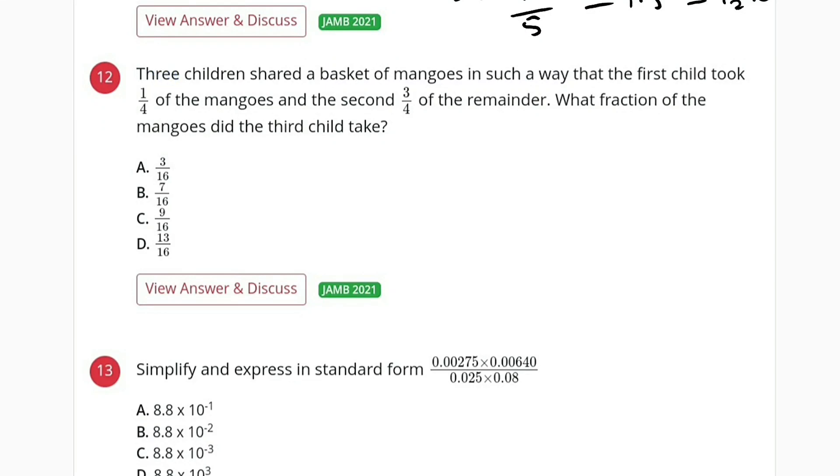Question number 12 reads: Three children shared a basket of mangoes in such a way that the first child took 1 over 4 of the mangoes and the second child got 3 over 4 of the remainder. What fraction of the mangoes did the third child take?